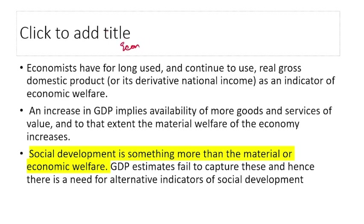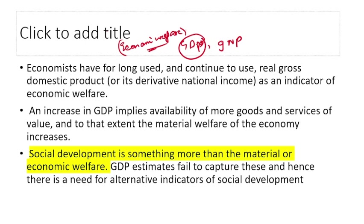We have already worked on economic welfare. Indicators of economic development are quite developed in society — country-wise, worldwide, globally. For example, you have GDP and GNP. GDP is the monetary value of all goods and services produced within your country. GNP adjusts for income of nationals working abroad.